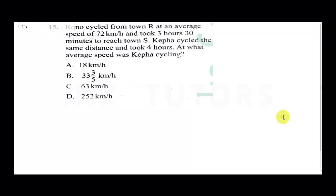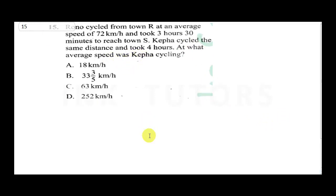Let me read the question again. Ronu cycled from town R at an average speed of 72 km per hour and took 3 hours 30 minutes to reach town S. Kepha cycled the same distance and took 4 hours. At what average speed was Kepha cycling?